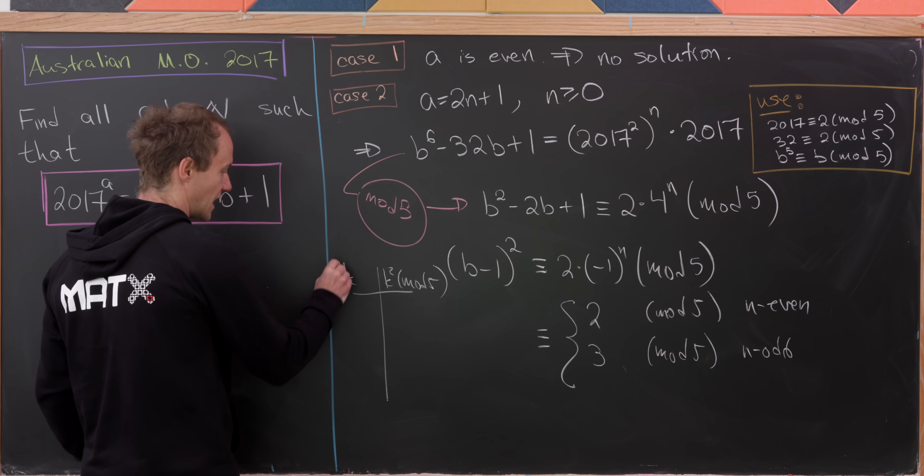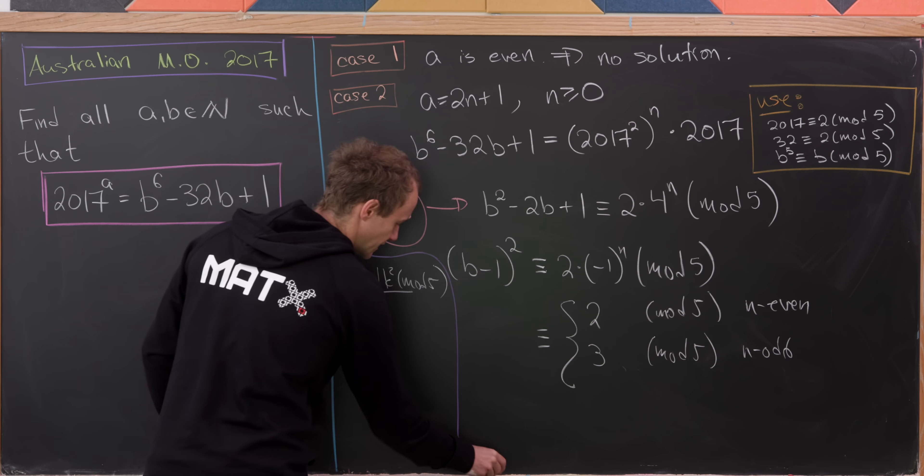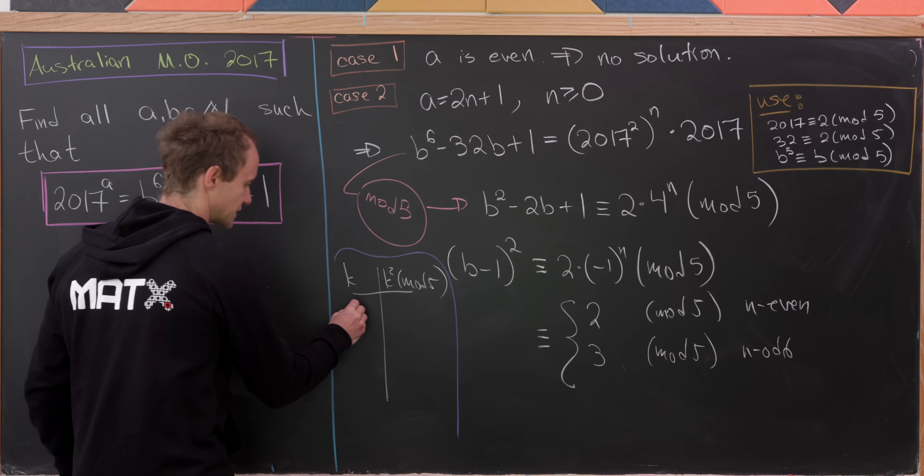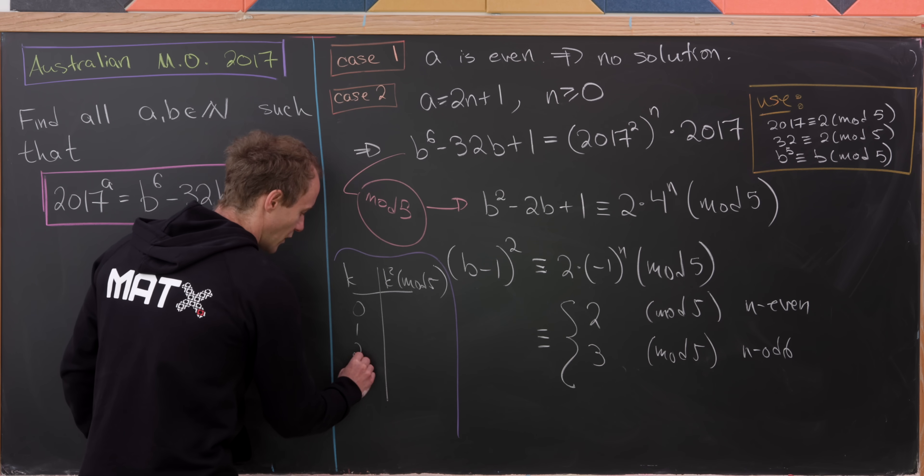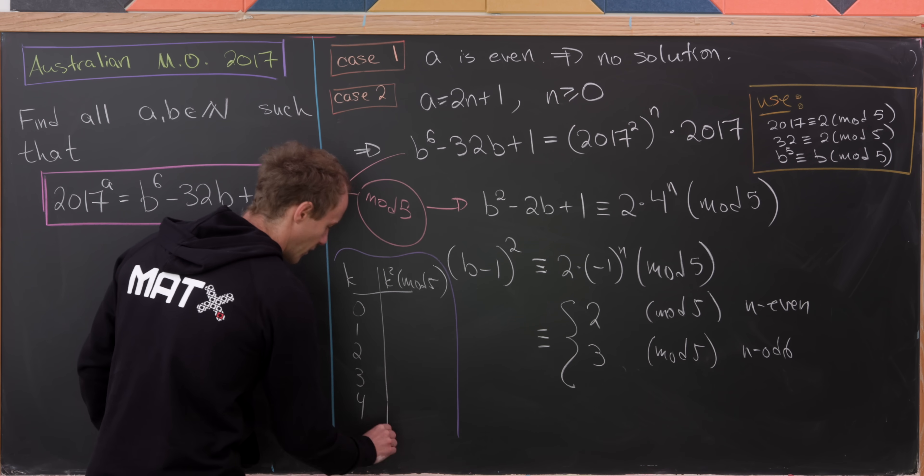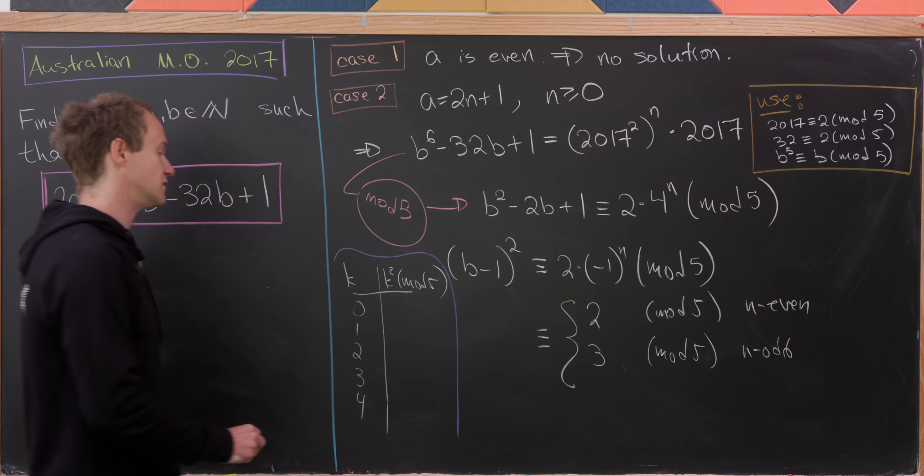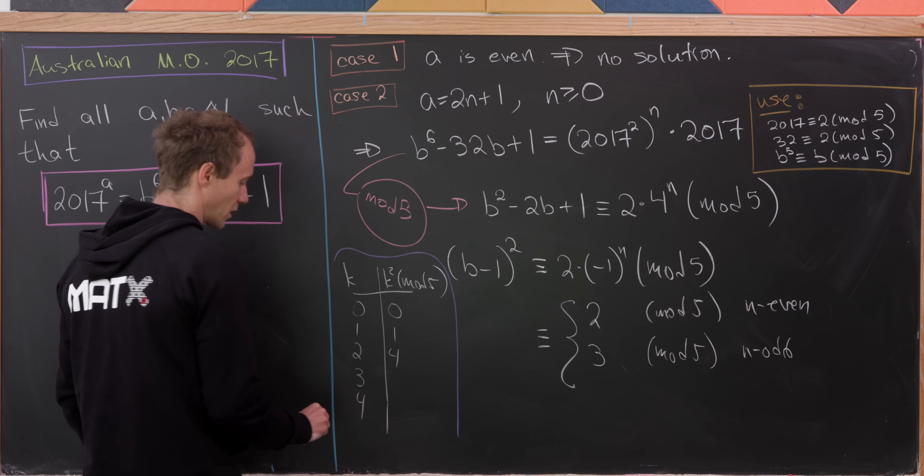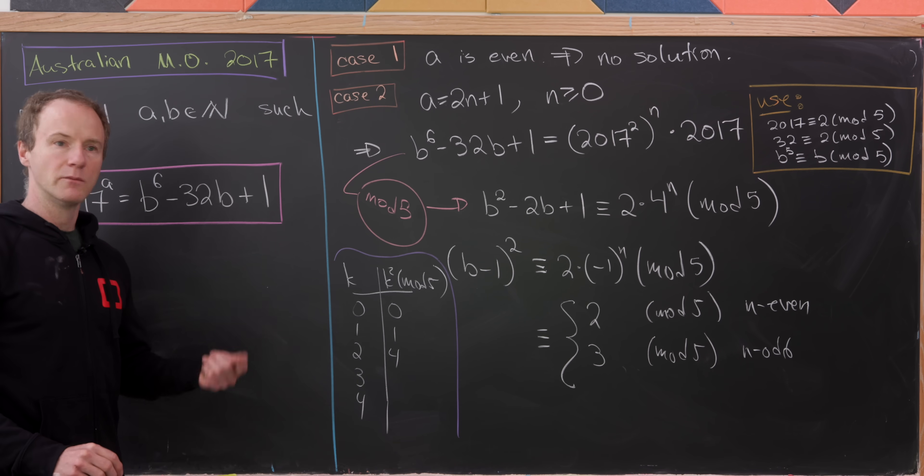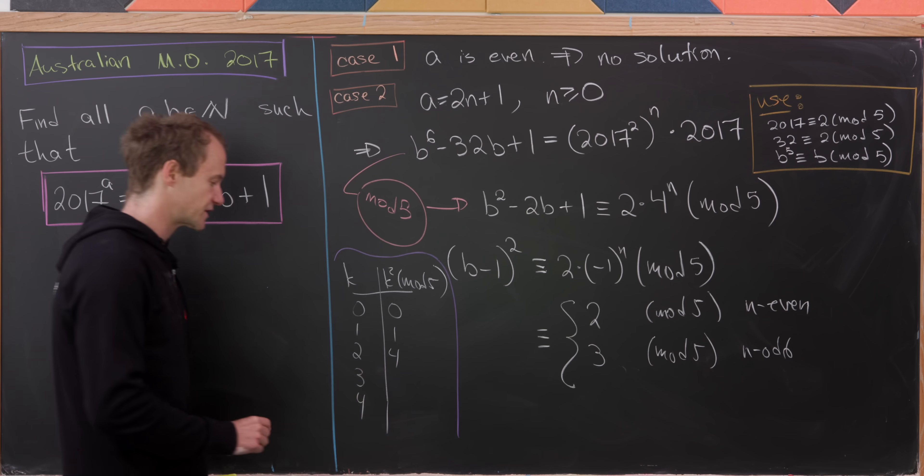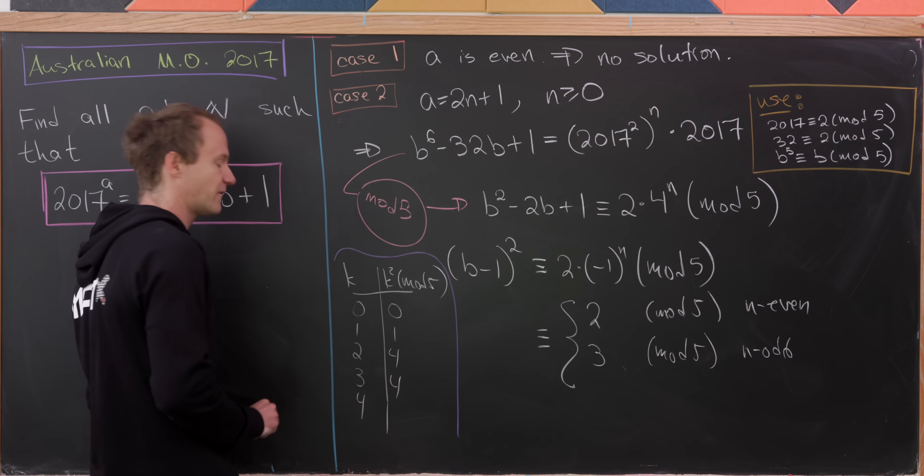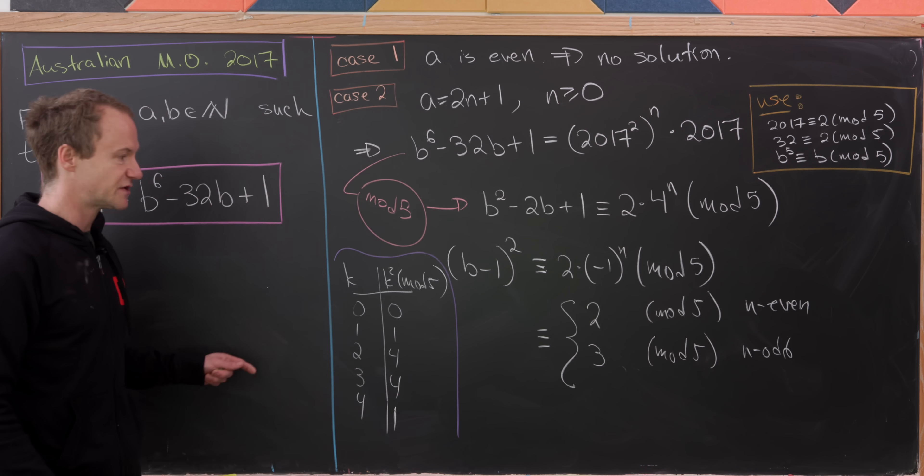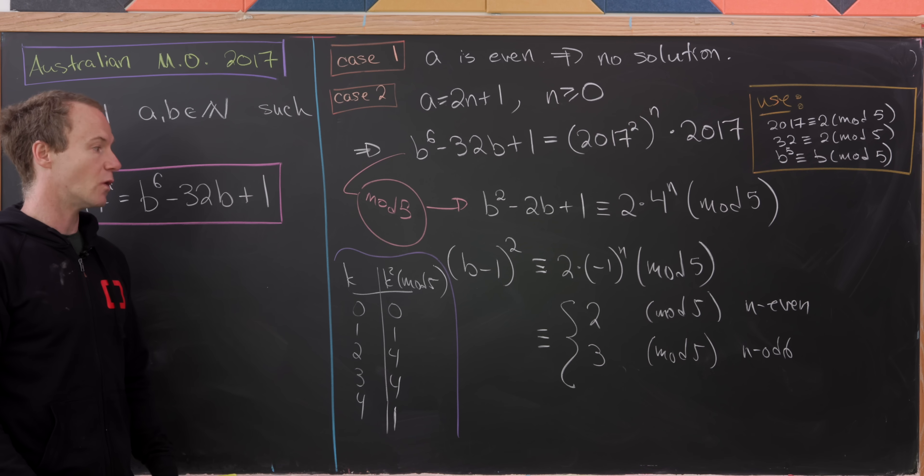And what we'll see is we never see 2 or 3 on the right-hand side of this table. So we only need to look at 0, 1, 2, 3, 4, because that's a complete set of residues mod 5. So 0^2 is 0. 1^2 is 1. 2^2 is 4. 3^2 is 9. But check it out, 9 is also equal to 4 mod 5. And then 4^2 is 16. But 16 is 1 mod 5. Observe that we never got 2 or 3.